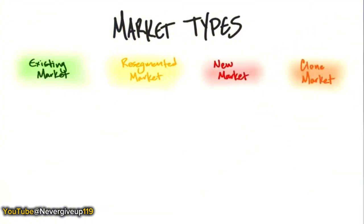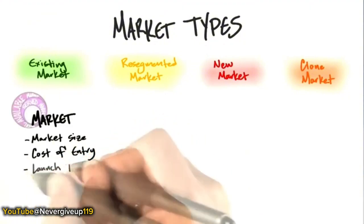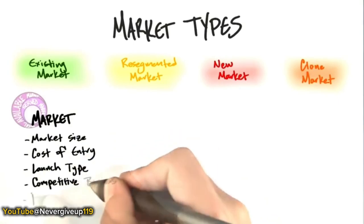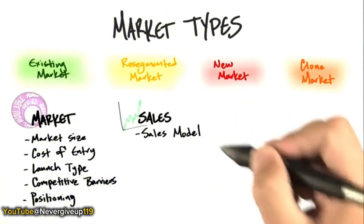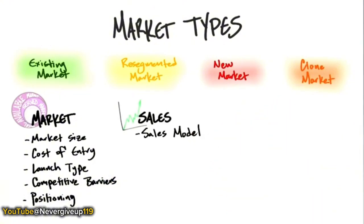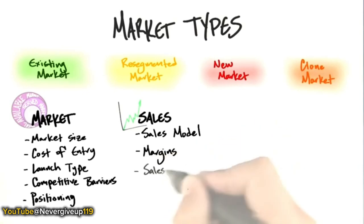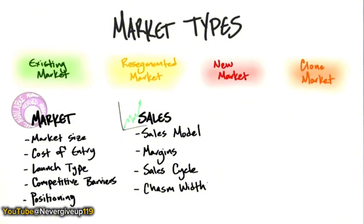The type of market changes everything. It changes your initial market size, how much it costs to enter the market, what kind of launch you do. It affects the type of competitive barriers you have and how you position or describe your product. It affects your sales model — whether you hire direct sales, when you hire them, what kind of margins you should have, how long the sales cycle takes, and something called the chasm width.